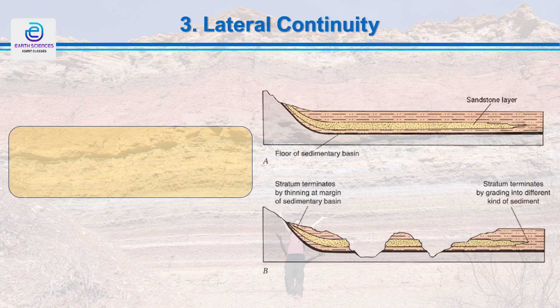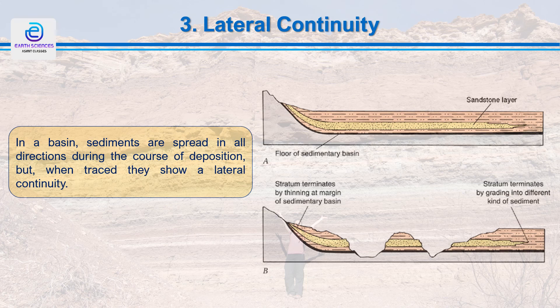In a basin, sediments spread in all directions during deposition and show lateral continuity because they are deposited horizontally as well as in a laterally continuous manner. In a valley, deposits may not be visible locally but are exposed again across the valley, because subsequent erosion removed those sediments — yet originally they were deposited in continuity extending to the limits of the basin. Sediments are deposited in a laterally continuous manner unless the edge of the basin is encountered or sediment supply is insufficient.